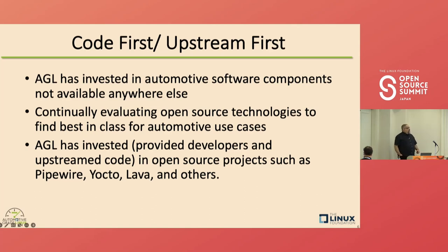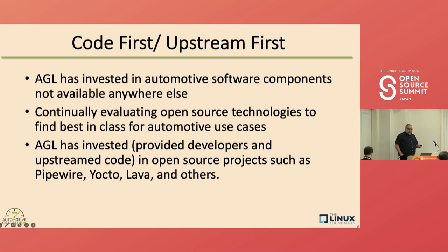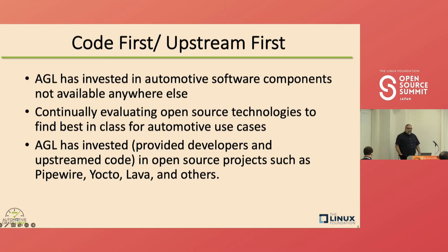AGL operates with a philosophy of code-first, upstream-first. We've invested in automotive software components not available anywhere else, and we continually evaluate open source technologies to find best-in-class packages for automotive use cases. We also invest in contractors and developers to directly develop code for the AGL UCB, and we've had our developers work on open source projects like Pipewire for automotive audio use cases, as well as Yocto, Lava, and others.